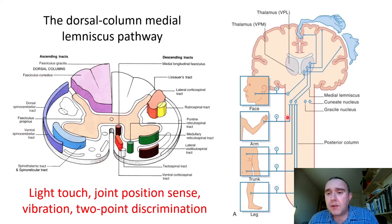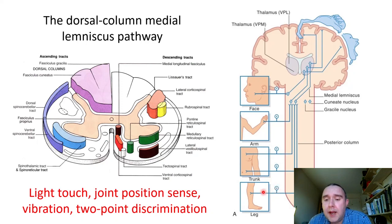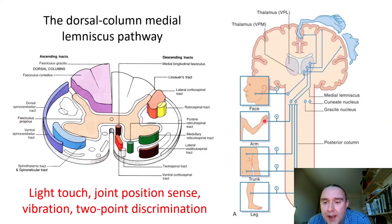Let's take a look at this diagrammatic representation of the entire central nervous system — the brain, the brainstem, and the spinal cord. If we start thinking about a primary sensory neuron detecting light touch in the lower limb, the cell body of this primary sensory neuron, like all primary sensory neurons, is found within the dorsal root ganglion. It enters the spinal cord through the dorsal root and ascends ipsilaterally on the same side all the way up to the medulla. A sensory neuron supplying the upper limb similarly has its cell body in the DRG and ascends ipsilaterally to the medulla.